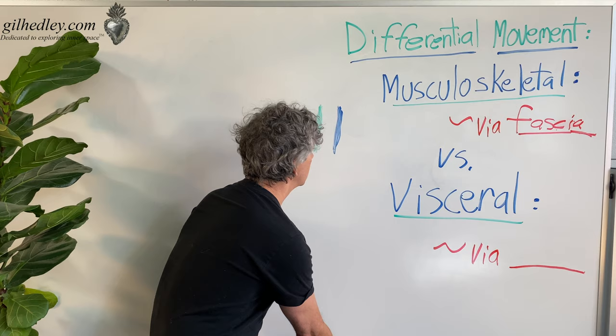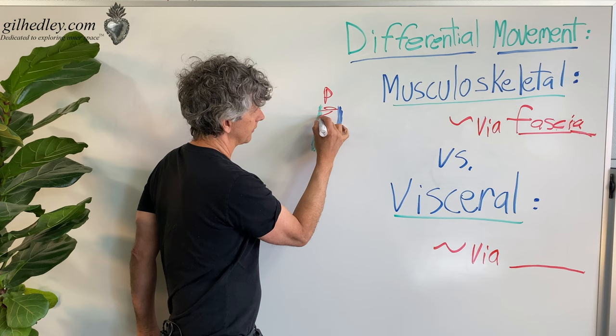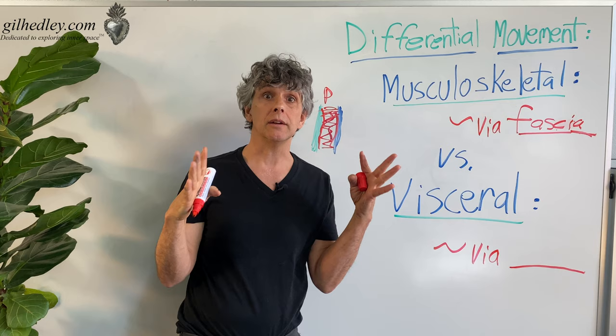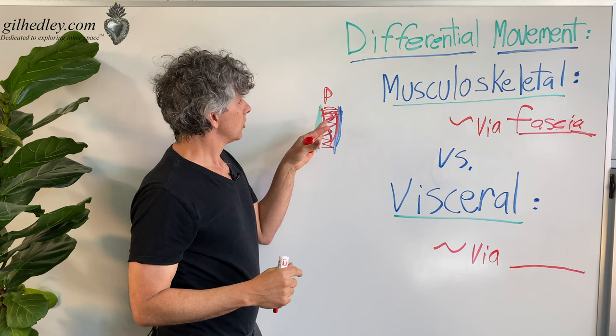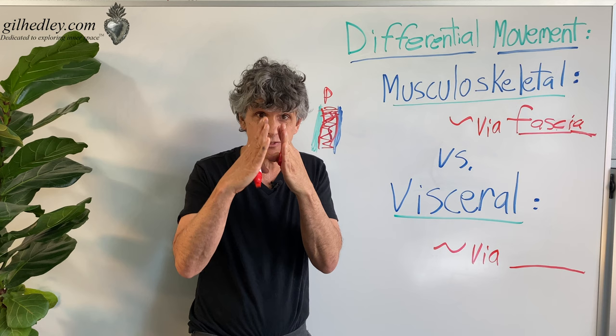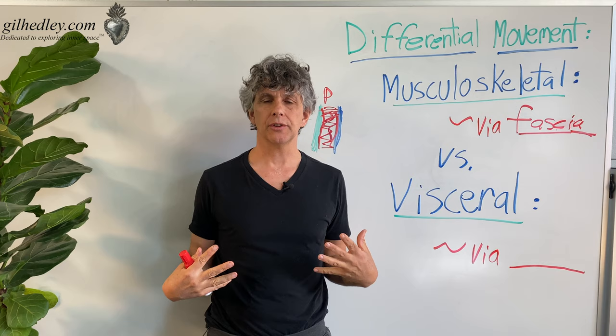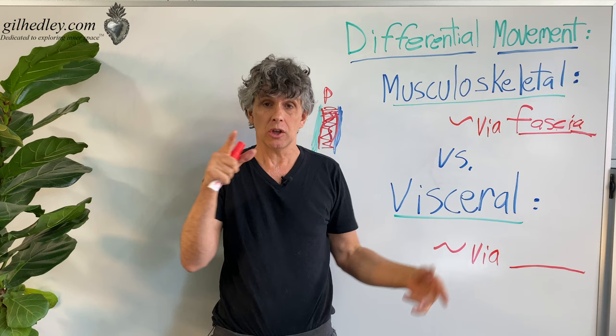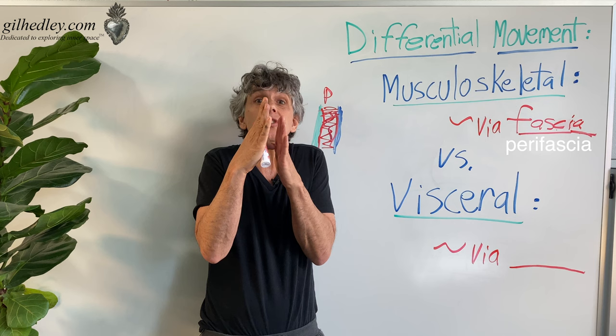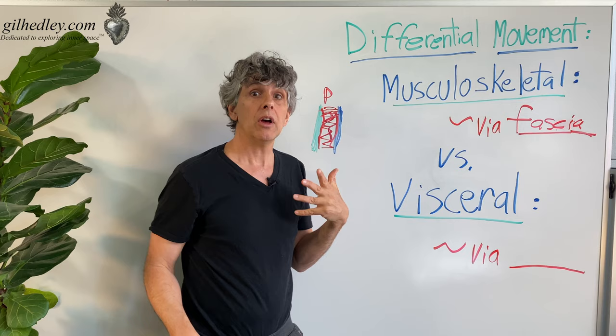We'll call it perifascia. The perifascia is a membrane system — flat and slippery in your body. So between your biceps brachii and your brachialis muscle, there's perifascia that allows the contraction of one relative to the contraction of the other. This property infiltrates your entire musculoskeletal system. So wherever there's differential movement in the musculoskeletal system, you'll find perifascial membranes enabling the distension or contraction in one place and stillness in another — differential movement via perifascia.